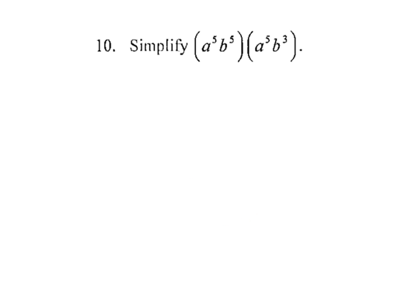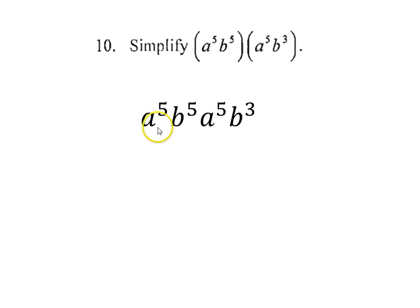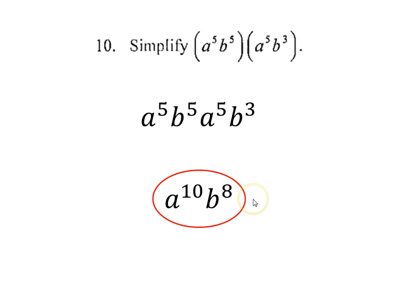And number 10, a to the fifth times b to the fifth times a to the fifth times b to the third. This might look a little complicated because we have parentheses, but all this really says is we're just multiplying all these things together. The fact that they're paired up in different sets of parentheses really doesn't matter. When we multiply things that have the same base, we add their exponents. So a to the fifth times a to the fifth is a to the tenth. And then b to the fifth times b to the third is b to the eighth. We can't add the ten and the eight together because their bases are different. So this is our answer.